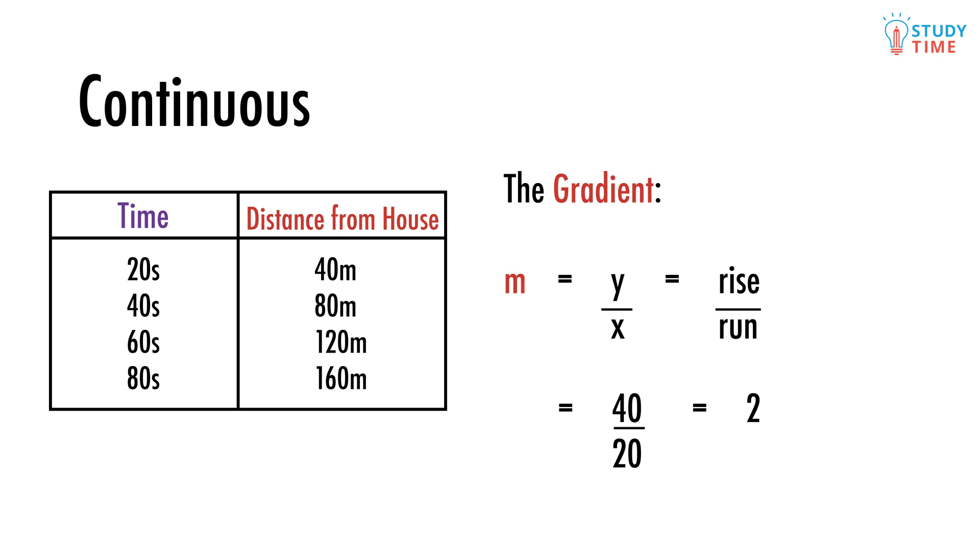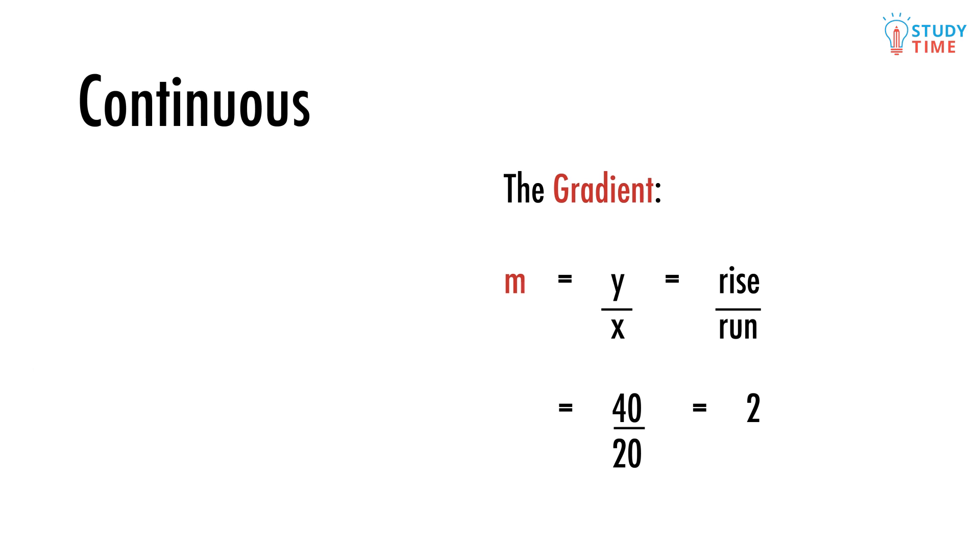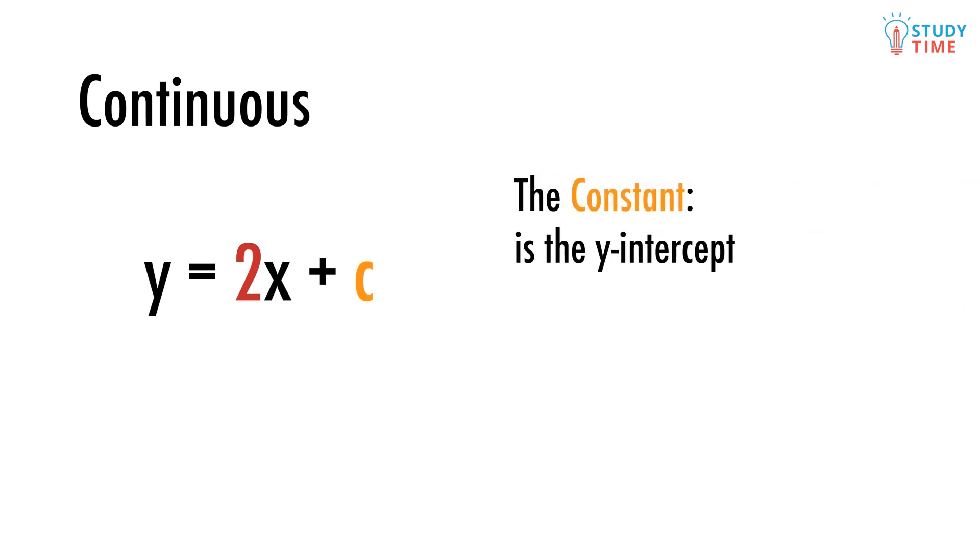We can leave it like this, but in maths it's best to simplify things when you can. 40 divided by 20 equals 2. The 2 doesn't change anything—it has the exact same value as 40 over 20. That's why they're equal. Great, so now we can write y equals 2x plus c.